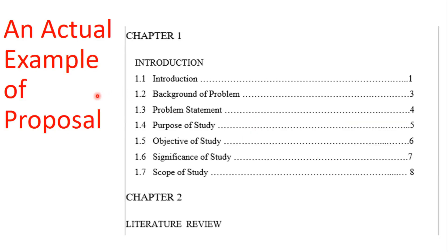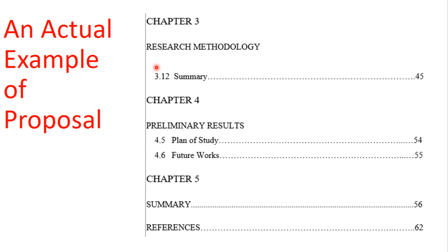Let's see an actual example of a proposal. You can see the headings we discussed — background of problem, problem statement, purpose of study — all under chapter one, introduction. Then chapter two is literature review, chapter three is methodology, chapter four is preliminary results with plan of study and future works, chapter five is summary, and lastly references. That's all, thank you.